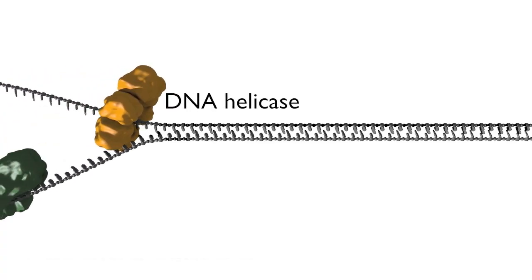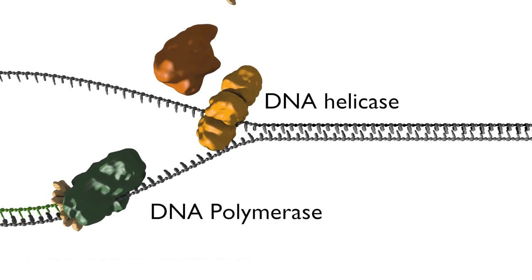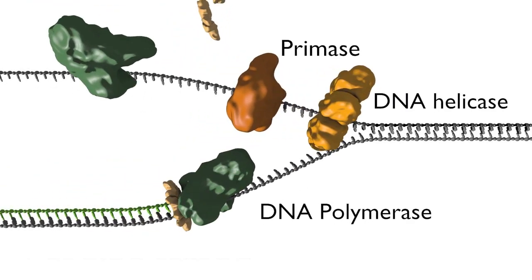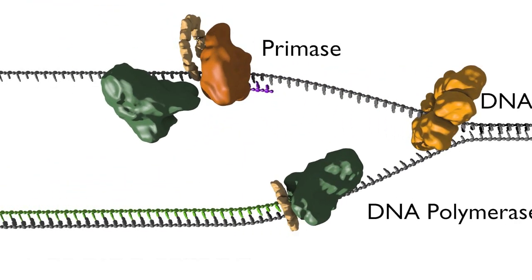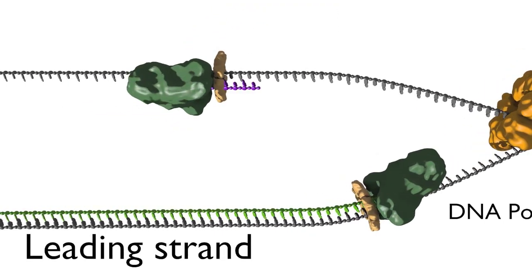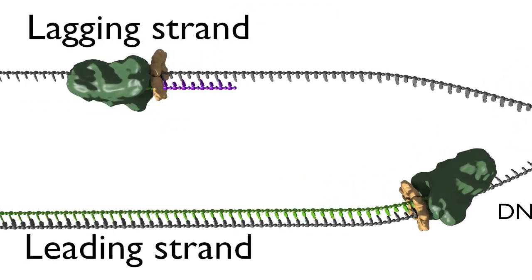To understand how polymerases are coupled at a replication fork, we will first show a standard representation of the replication fork. In this typical representation, two DNA polymerases are moving in opposite directions with one copying the leading strand of the DNA and the other copying the lagging strand.